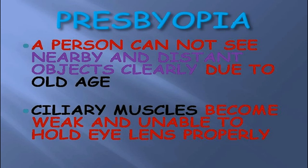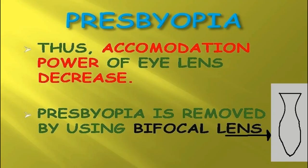Another defect associated with the human eye is presbyopia. In presbyopia, a person cannot see nearby or distant objects clearly due to old age. Due to old age, the ciliary muscles of the human eye become weak and are unable to hold the eye lens properly. Because of this, the accommodation power of the eye lens decreases. Accommodation means the property of the eye lens to adjust its focal length.